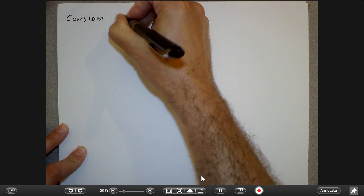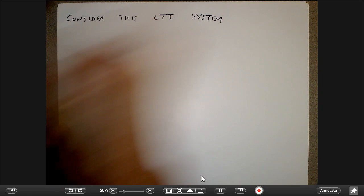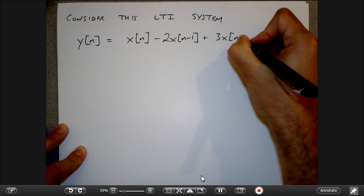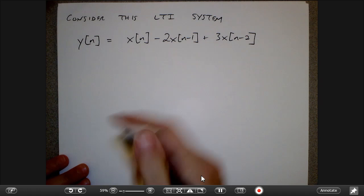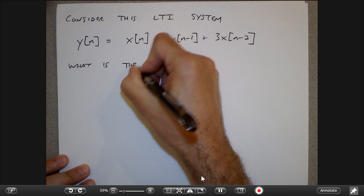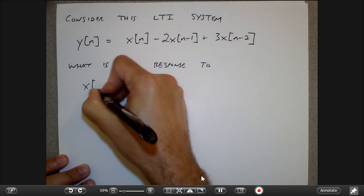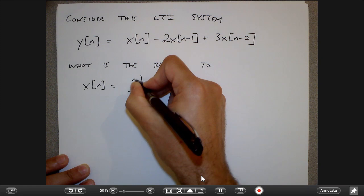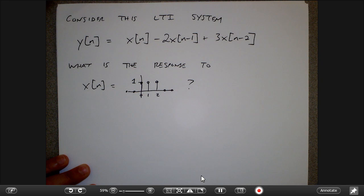Let's look at a single system in a bunch of different ways. Consider this LTI system — you're going to take my word for it that this system is, in fact, LTI. One of the homework problems is to take a system and prove whether or not it's linear and time-invariant. This one is linear and time-invariant, and I want to know what is the response to this signal here — basically three impulses of height one.